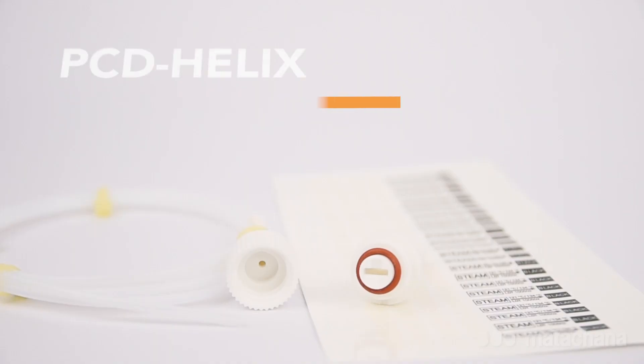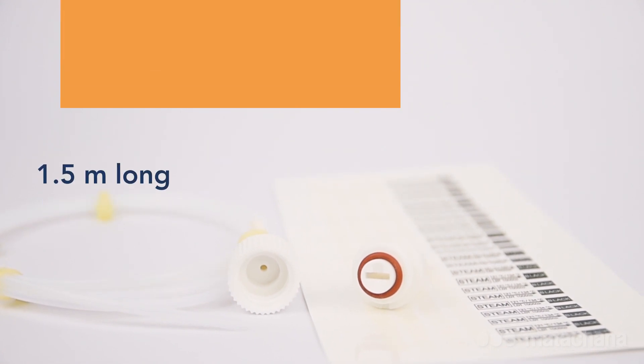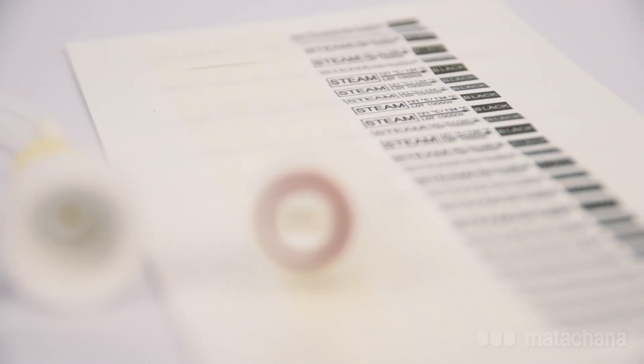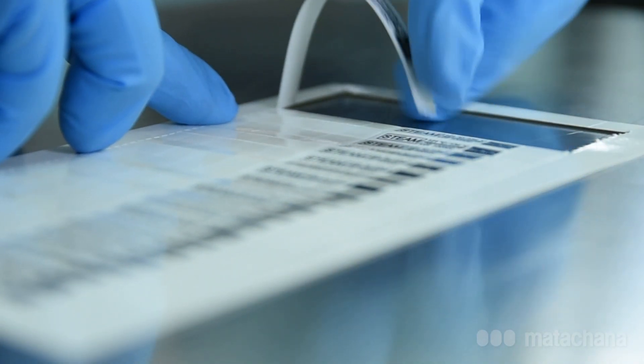The PCD Helix is a cannulated device equipped with a 1.5m Teflon tube of 2mm diameter at the end of which a receptacle is located that allows the introduction of the chemical indicator.